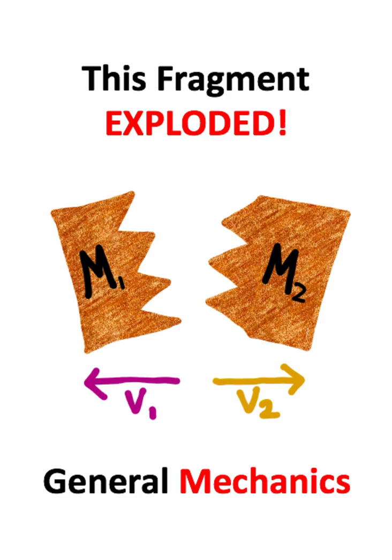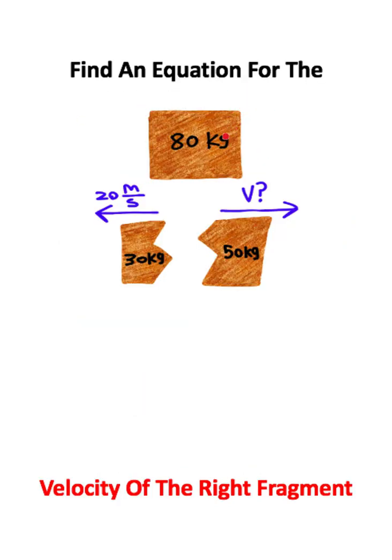We are looking at a fragment that exploded. So we have this 80 kilogram mass which explodes into two fragments. We're trying to find an equation for the velocity of the right fragment.